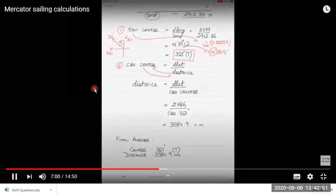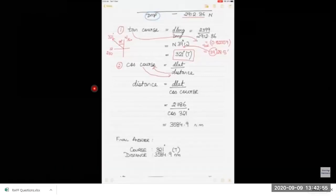Now to calculate the distance, the formula is cos course equals d lat upon distance. So distance equals d lat upon cos course. D lat we had calculated: 2786. And course we got now, so course cos 321 degrees or you can use even 39 degrees.